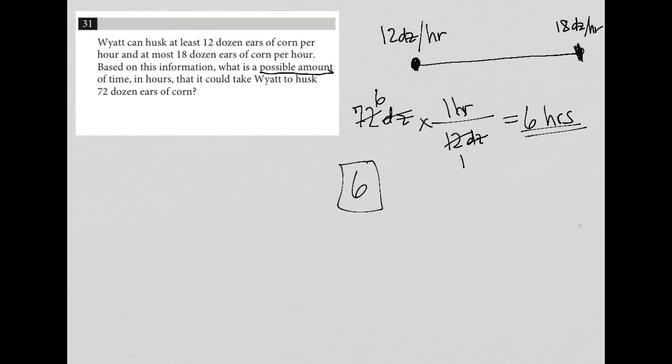If you wanted to go at his fastest point, we could do the exact same thing and say, well, there's 72 dozen to husk and he's able to husk 18 dozen for every one hour. Notice that I'm putting the 18 on bottom and not on top because I want these units of dozens to cross out. I can put this in any order I want, hour on bottom or hours on top, but really I arrange them based upon the unit that I want to cross out and the unit that I want to have in my final answer.